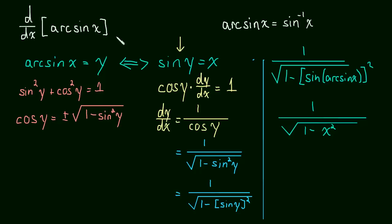And that's our derivative. That's the final answer. This is equal to 1 divided by the square root of 1 minus x squared.